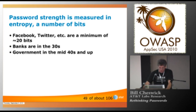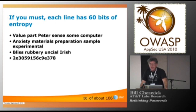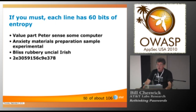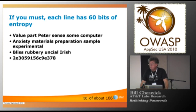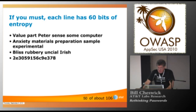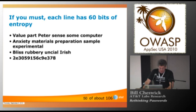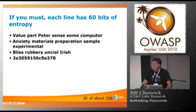If you have a really complicated dictionary, it might only be a four-word passphrase. Here are four passphrases, each of which has 60 bits of entropy. That's enough for the government. You can do decent crypto at 60. Someone could crack it, but brute force takes a while. 'Value part Peter sent some computer.' I think I could remember that. They're pretty easy words. Or how about 'anxiety materials preparation sample experimental'? All right, that seems harder. Obviously, we're using bigger words now.